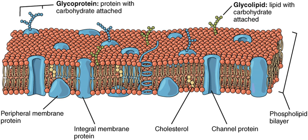Both the plasma membrane and internal membranes have cytosolic and exoplasmic faces. This orientation is maintained during membrane trafficking. Proteins, lipids, and glycoconjugates facing the lumen of the ER and Golgi get expressed on the extracellular side of the plasma membrane.